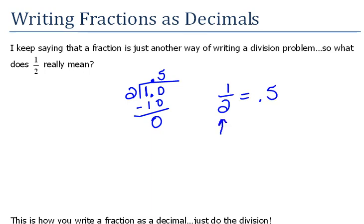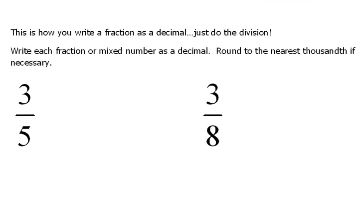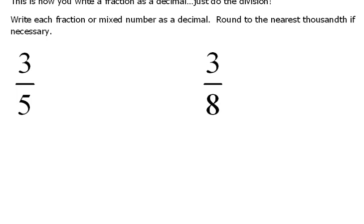This would just be the fractional form, and 0.5 would be the decimal form. But they have the exact same meaning. So this is how we're going to change fractions over to decimals. We're just going to do the division.